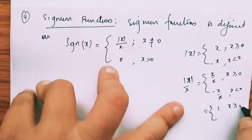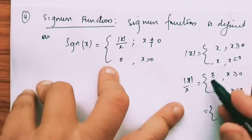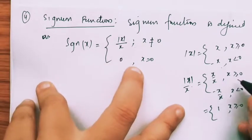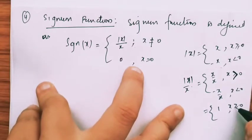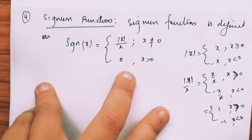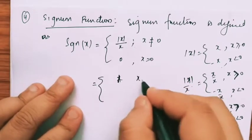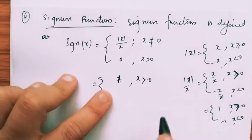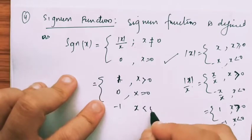This will give you 1 when X is positive. But remember that at 0, the signum function is defined to be 0, so here the inequality is strictly greater than 0 only. And minus 1 when X is less than 0. So what we have obtained: 1 when X is greater than 0, 0 when X is 0 — यह तो defined है हमारा — और minus 1 when X is negative.